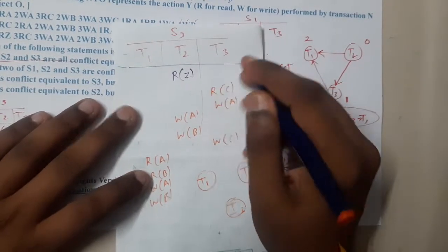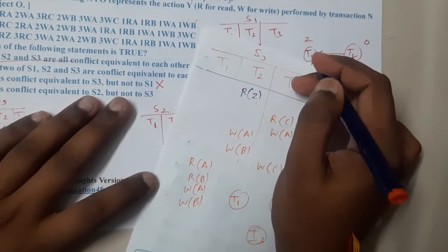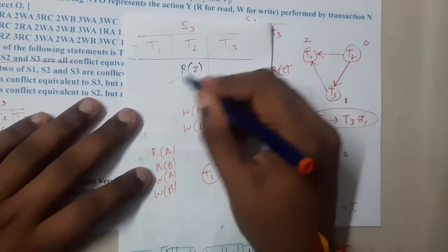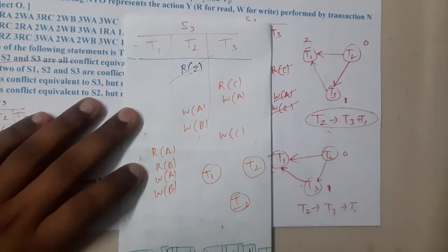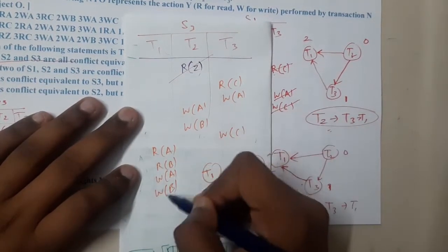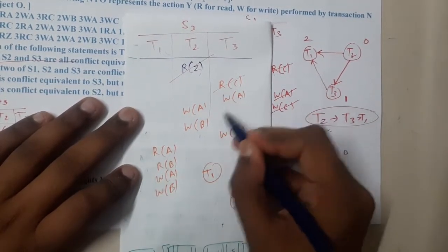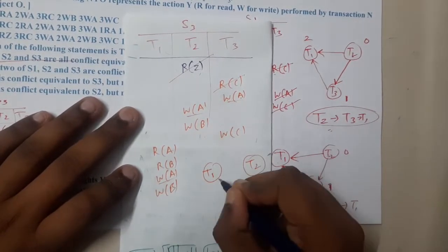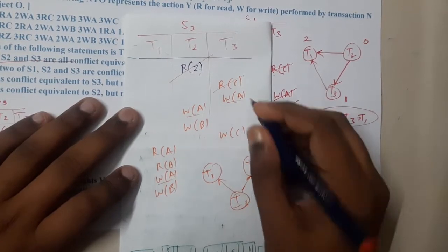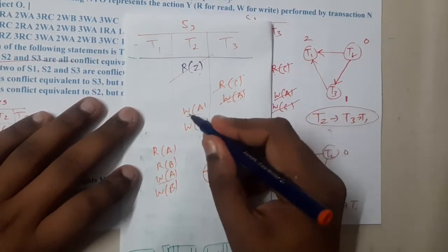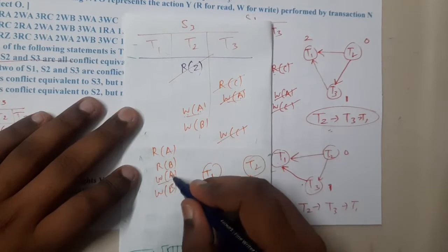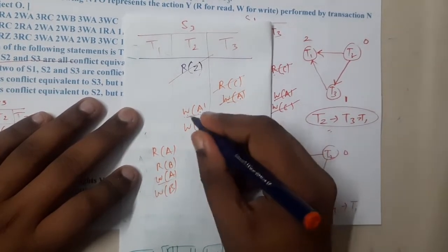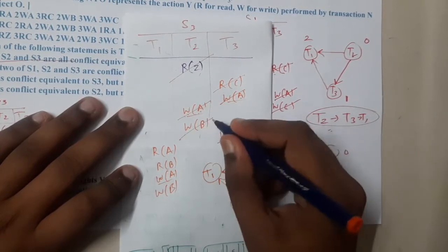From T2, we are working on Z — Z is not covered anywhere else, so no issue there. Moving on to Read C — there is no Write C before it, so no issue. Write A will clash with everyone. Indirectly this is T3 — from T3 we are going to have edges to everyone. There is also an edge from T2 to T1. Write B is also done.